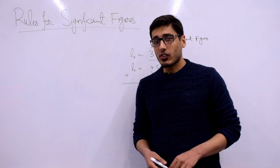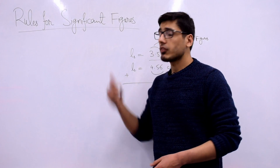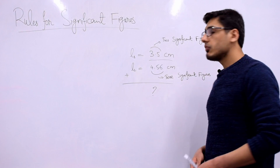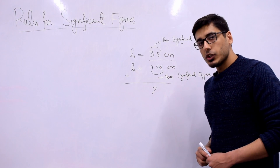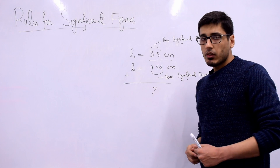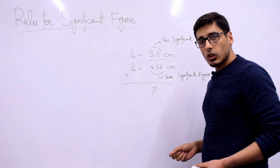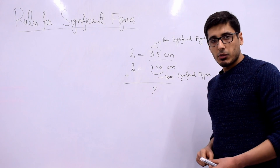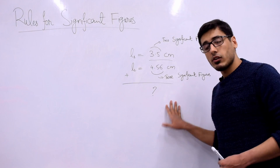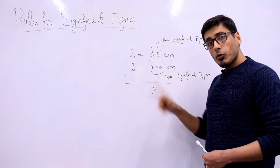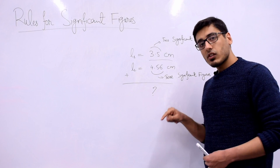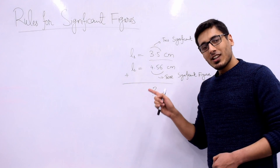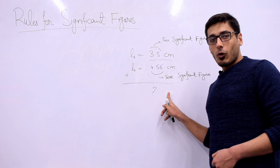Today I will be talking about the rules for significant figures. To understand why we need these rules, let's take an example. Suppose you measured the length of an object using a meter rod and got 3.5 centimeters — that has two significant figures. Now say you measured another object with a device giving three significant figures, and your measurement is 4.56 centimeters. Your task is to add these two measurements. How many significant figures should the result contain? This is where the rules for significant figures come into play. We'll learn the rules first, then answer this question.